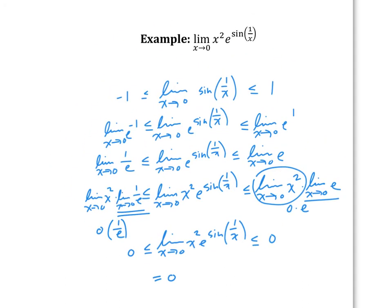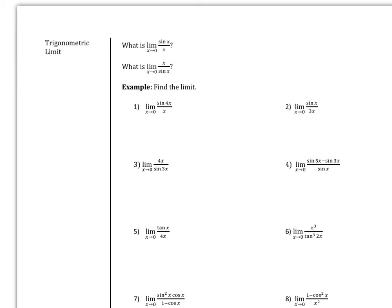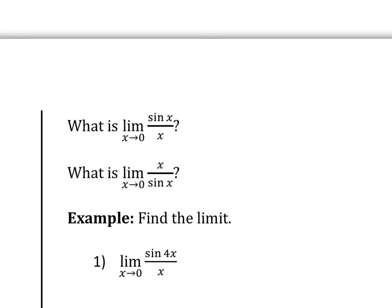To review: the squeeze theorem starts with a function you can control — you stick it between a higher and lower bounding function, then apply whatever operations are needed to build up to the original function. Then you evaluate the two bounding ends. Now we're going to talk about trig limits.